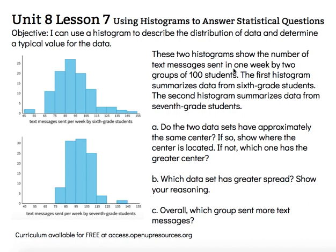Hi, this is Mrs. Nelson. We're looking at Unit 8, Lesson 7: using histograms to answer statistical questions. The objective says I can use a histogram to describe the distribution of data and determine a typical value for the data. That keyword distribution tells me we're going to be looking at the spread, and that keyword typical tells me we're probably going to be looking at the mean or the average.